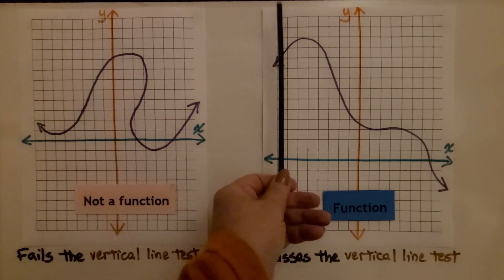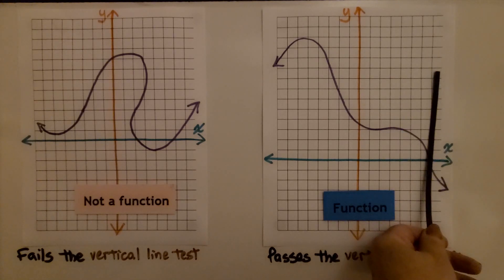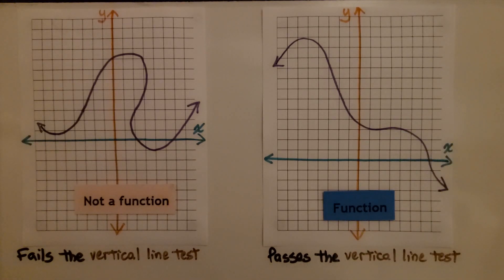Now look at this one. No matter where I put this vertical line, it's only passing through the graph once. That means it passes the vertical line test, and it is a function.